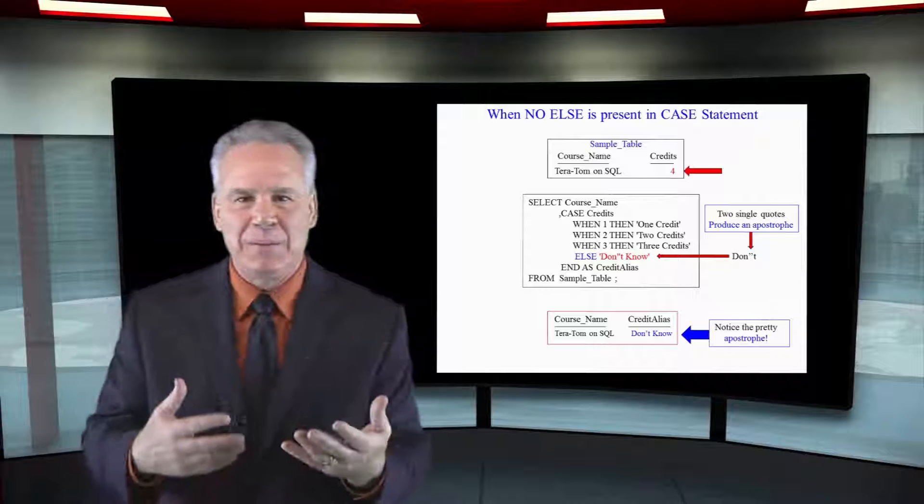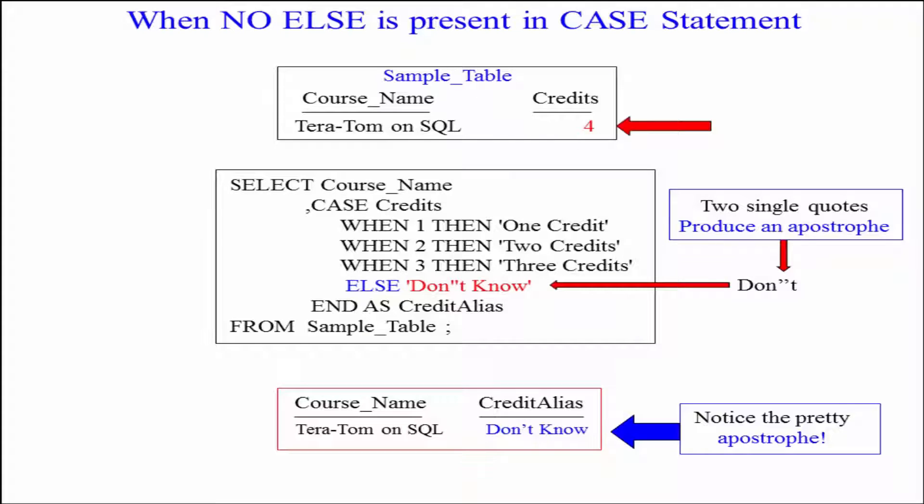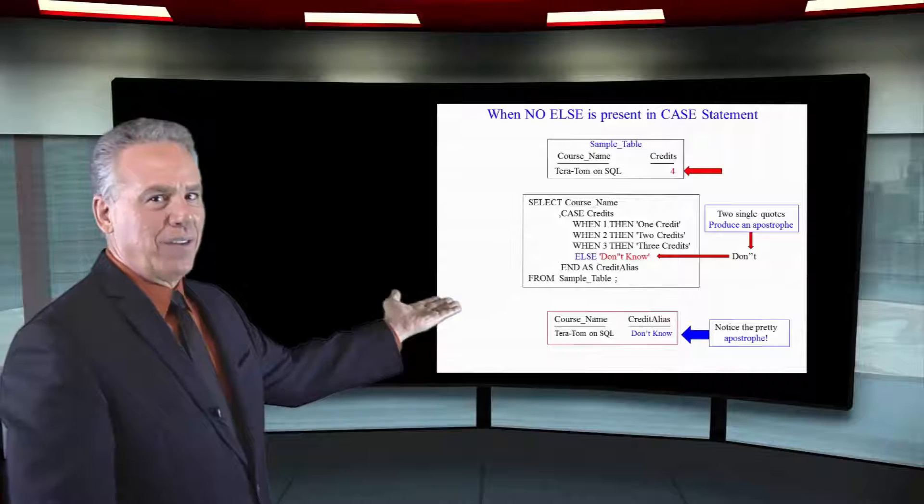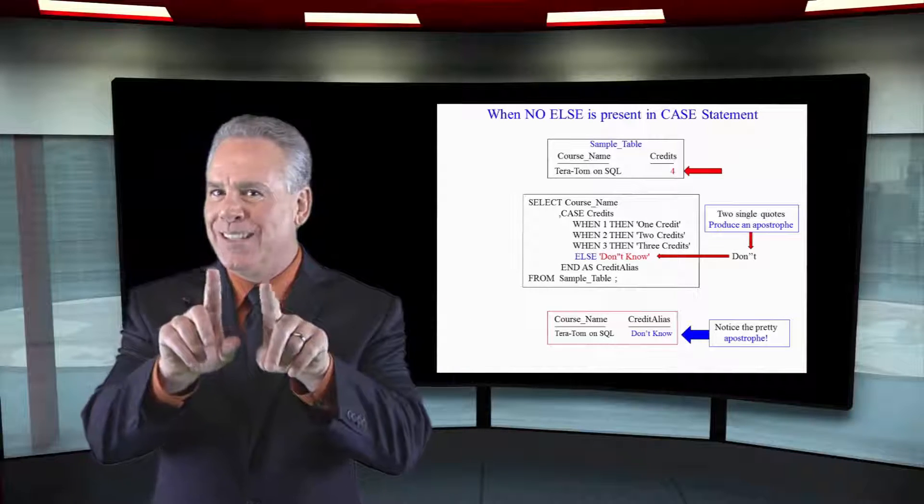I can't tell you how many times people go, look, it's either one credit, two credits, or three credits. It can't be anything else. And then there's no value in there or it happens to be a four. That's why I like to always have an else statement so it catches any problems for me. And notice that pretty little apostrophe. That's two single quotes.